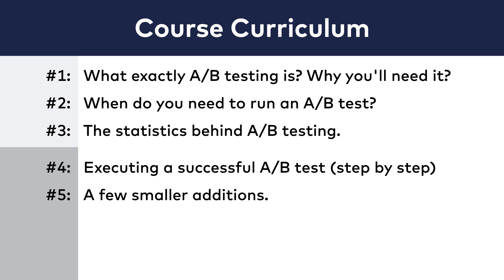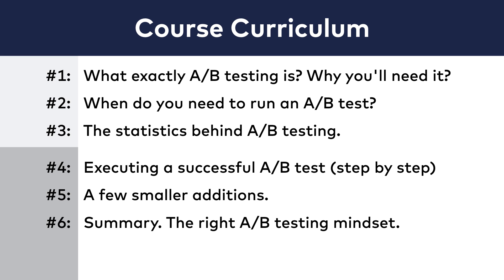In module 5, I will add everything that didn't naturally fit into the main curriculum. These will be smaller, but sometimes important questions — for instance, should you segment mobile and desktop users for your tests? Or what are the limitations of A-B testing? And a few more. Module 6 will be the summary of everything. In this whole course, I won't just show you what, why, and how you should do when running experiments. I want you to understand and internalize the right A-B testing mindset too, so in the sixth module we will go through the most important takeaways of the course.